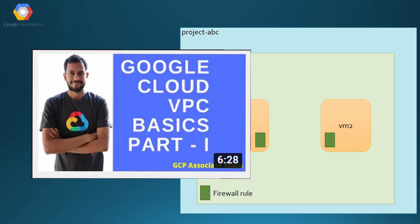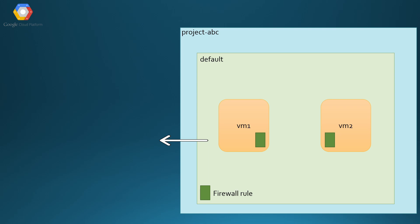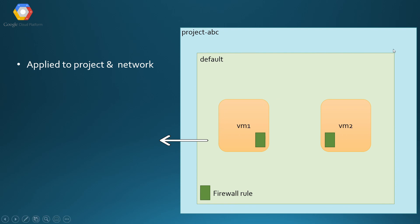Before we go into firewall rules, I highly recommend watching my previous video on the VPC network. The VPC network, as you all know, is a logical network inside a project. In this diagram you can see I have a project ABC with a default network — whenever you create a project you get a default auto mode network. Firewall rules are always applied to the network and the project, so you cannot distribute a firewall rule to other networks.